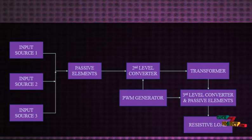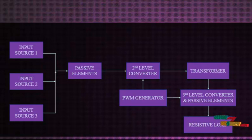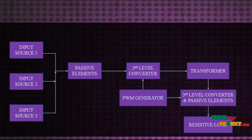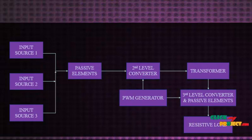The input sources form the first level. The second level converter converts DC to AC and is connected before the primary winding of the transformer. After the transformer, the third level converter is connected between the resistive load. The third level converter consists of passive elements and converts AC back to DC.